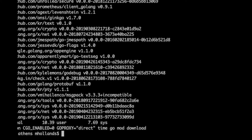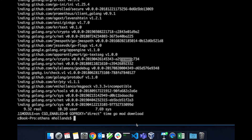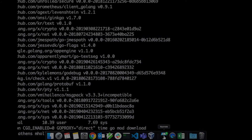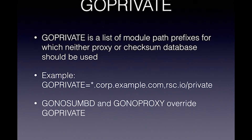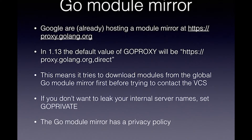The default value for GOPROXY will be https://proxy.golang.org,direct. Use GOPRIVATE to avoid sending data for packages you don't want to go to the proxy, and set those to go direct. It has a privacy policy — and it's Google, they want to know everything.